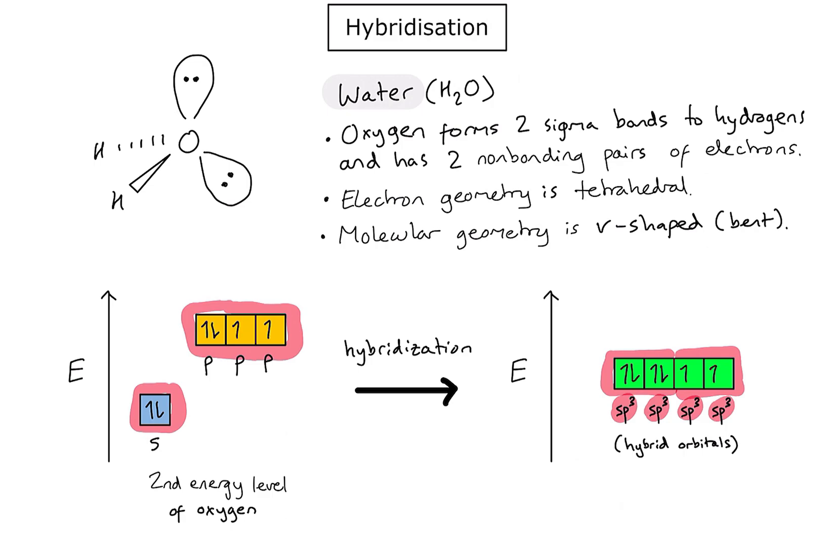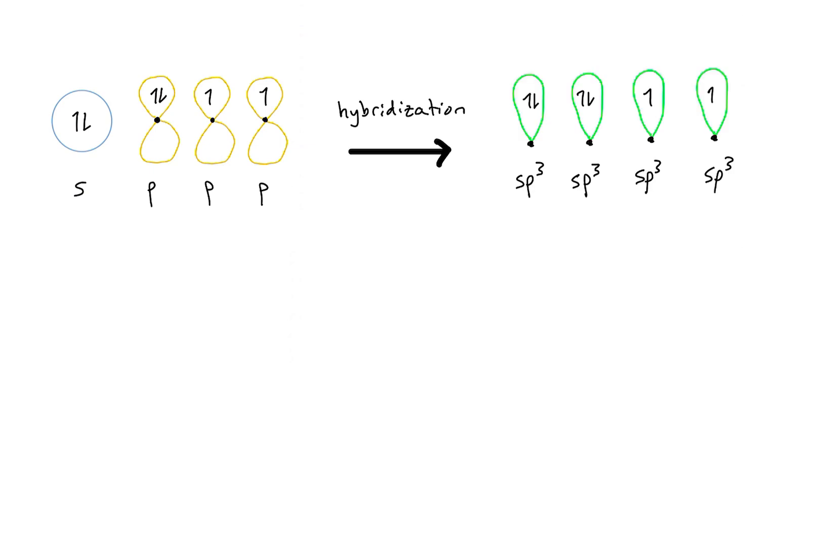So let's have a look at the actual shape of those orbitals. We started off in an isolated oxygen atom with something like that. However, during the process of hybridisation, what we've done is we've formed four identical orbitals, each with that kind of lobe, single lobe or balloon shape, and they are each called sp3 hybrid orbitals.